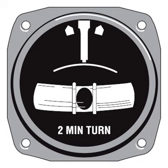When the ball is centered in the middle of the tube, the aircraft is said to be in coordinated flight. If the ball is on the inside of a turn, the aircraft is slipping. When the ball is on the outside of the turn, the aircraft is skidding. A simple alternative to the balance indicator used on gliders is a yaw string, which allows the pilot to simply view the string's movements as a rudimentary indication of aircraft balance.